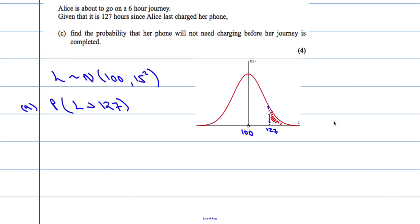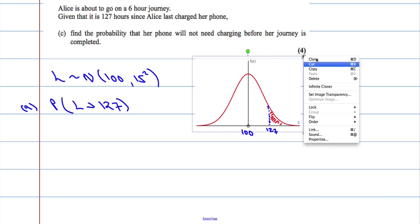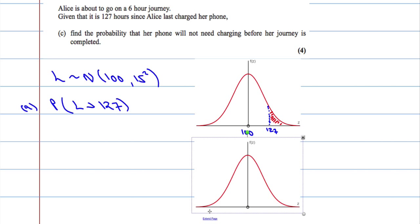The normal distribution doesn't give us values straight away. We can use the standard normal distribution — another distribution which is exactly the same shape, but with a mean of 0. There will be some value, little z, which has the exact same area.